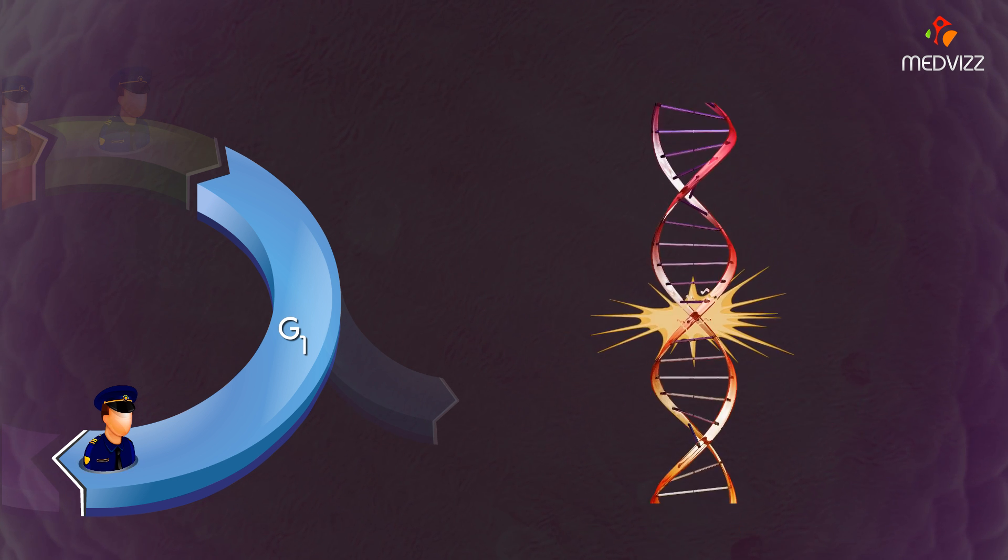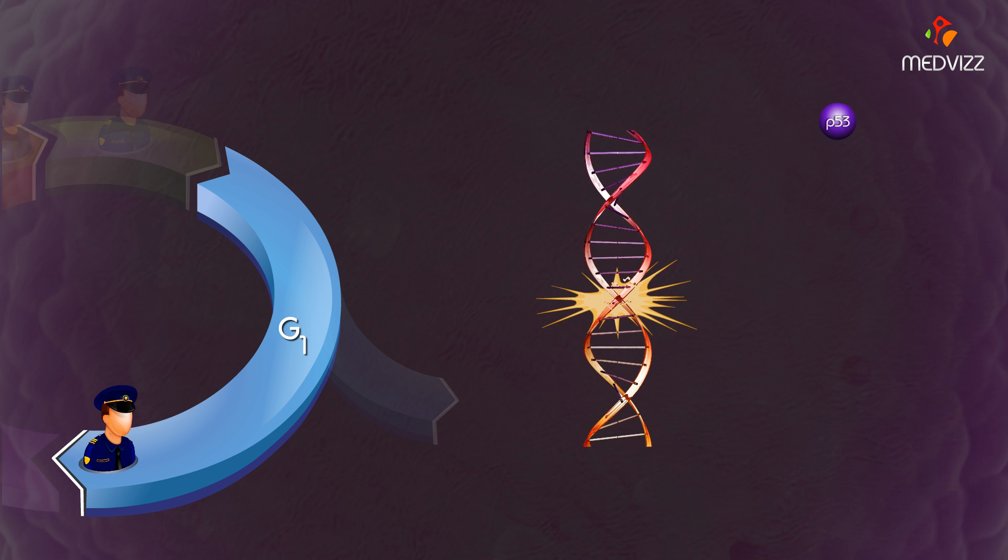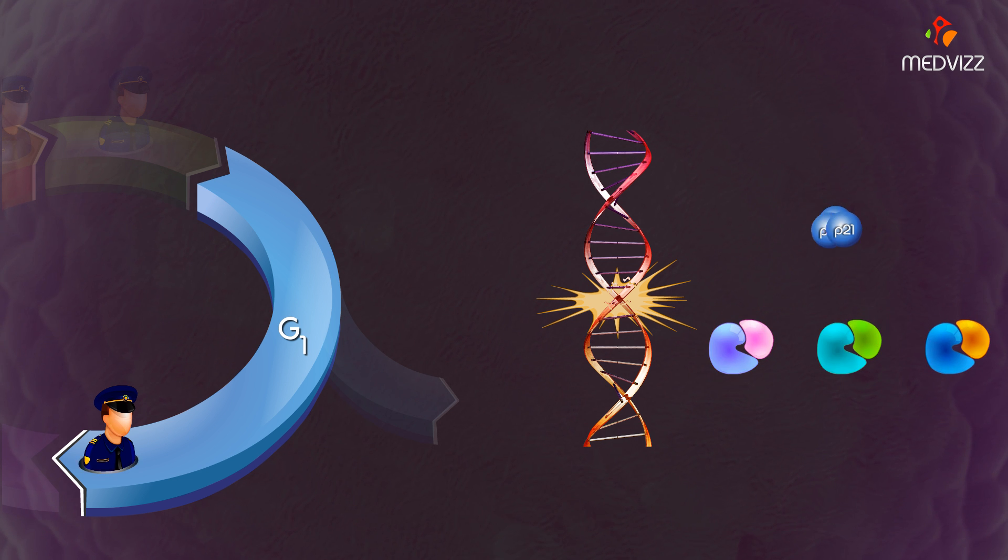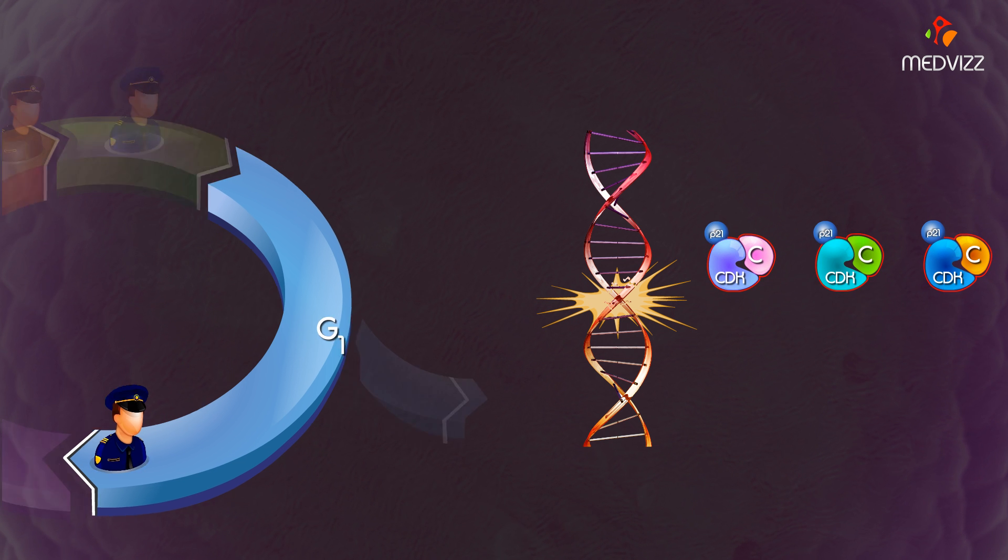If there is significant DNA damage, p53 stimulates production of p21. P21 binds and inhibits all cyclin-CDK complexes, which leads to cell cycle arrest until the DNA damage is repaired and p21 levels drop.